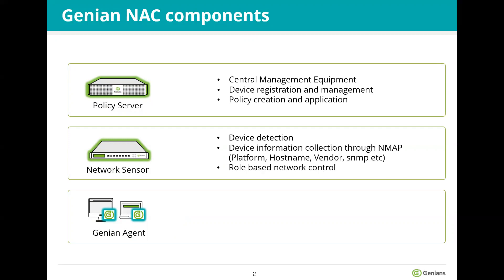Secondly, network sensors are located on the same network as the user's device. A network sensor detects all devices on the same network and collects information from the device, and sends it to the Poly server. Network sensors quarantine the users who do not comply with the security policy.